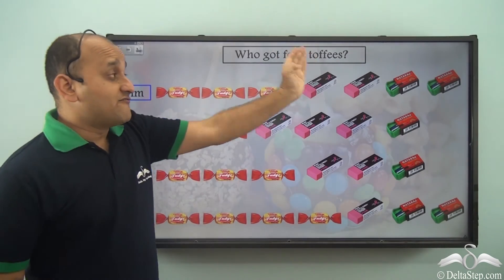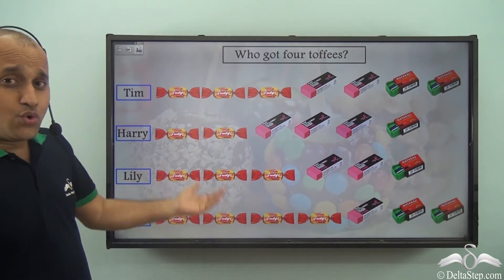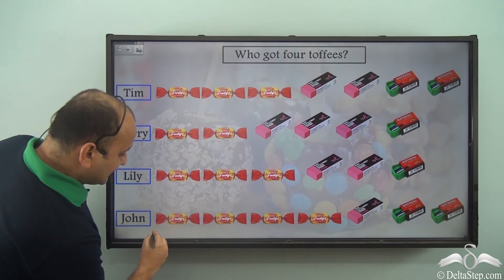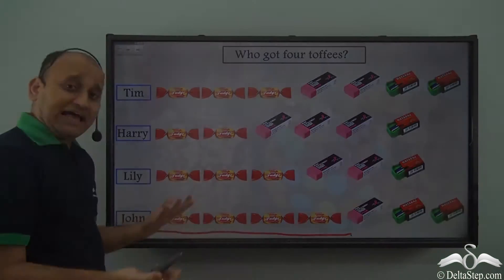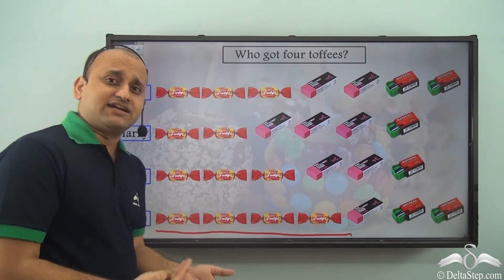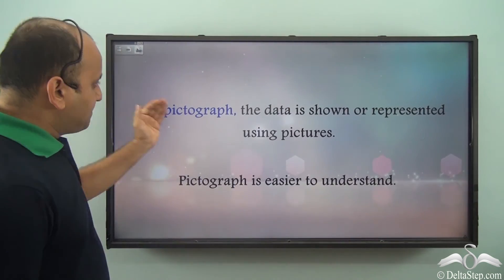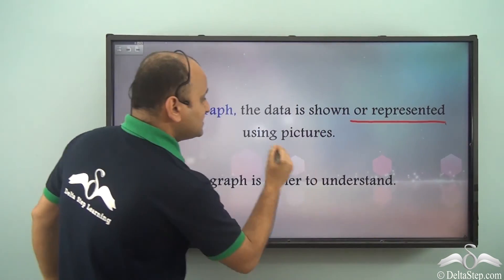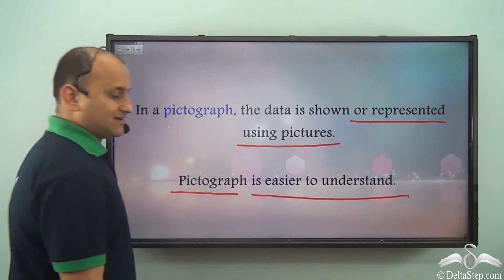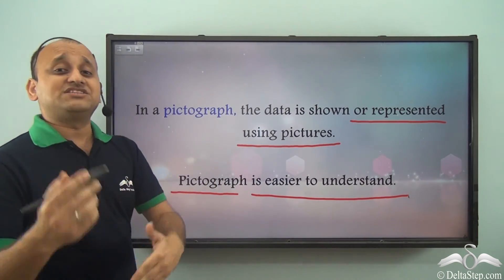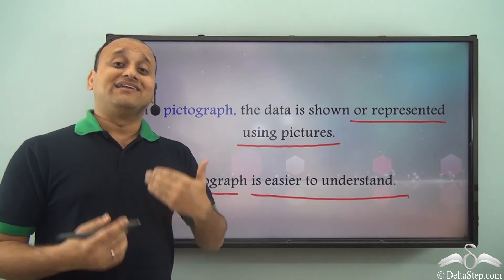Who got four toffees? Looking at the pictograph, it's clearly understandable that John got four toffees. When you have images in front of you, reading, understanding, and interpreting the data is very simple — that is why pictographs are so advantageous. In a pictograph, data is represented using pictures, and it is easier to understand since numbers can sometimes be confusing. Pictograph is a great way of representing data.